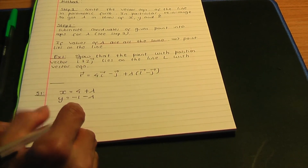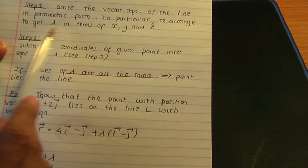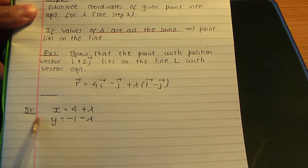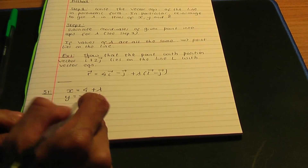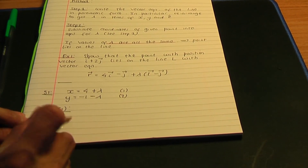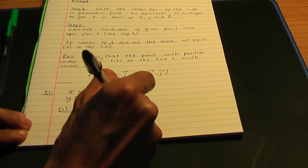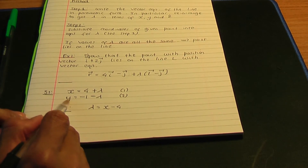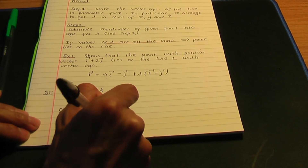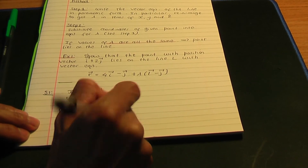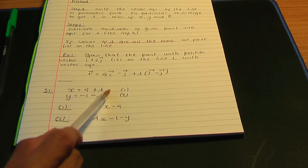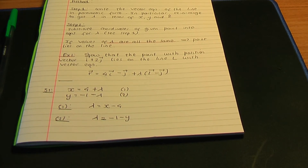These two equations for x and y in terms of the parameter are your parametric equations — that is step number one. But step number one isn't finished because we need to rearrange to get lambda in terms of x and y. We don't have a z. So rearranging equation 1 for lambda: lambda = x − 4. And rearranging equation 2 for lambda: lambda = −1 − y. This ends step number one.